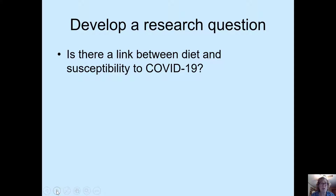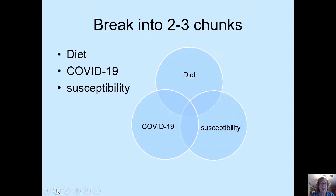First, I develop a research question: Is there a link between diet and susceptibility to COVID-19? I pick key terms and break it into chunks — words or short phrases. I can think of each of these as a circle. In the middle of the three circles, combined with AND, are my articles that have all three.